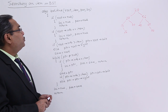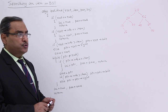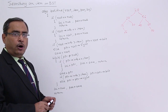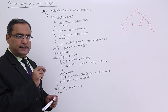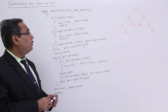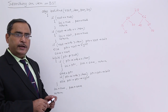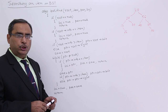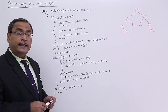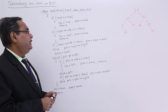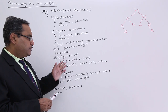The algorithm is called BST_find with parameters root, item, par, and lock. Root and item are input parameters; par and lock are output parameters. Lock returns the node address whose info equals the search item, and par holds the parent address of lock. If root equals null, then lock equals null, par equals null, and we return. If root's info equals item, then lock equals root, par equals null, and we return — since root has no parent.